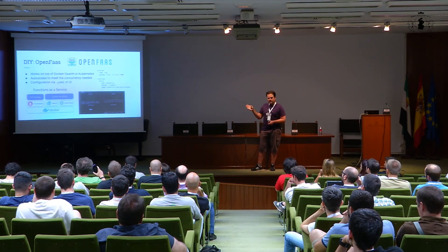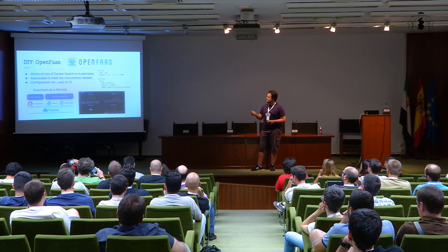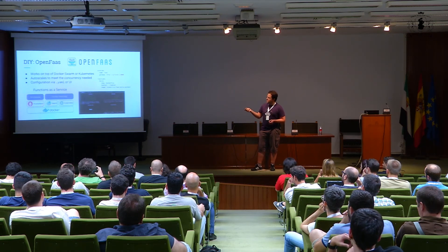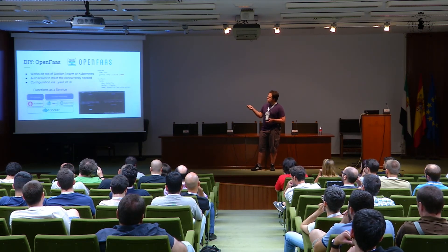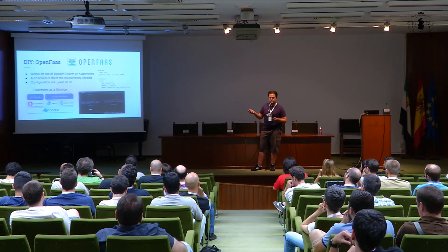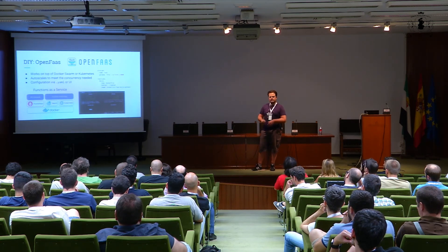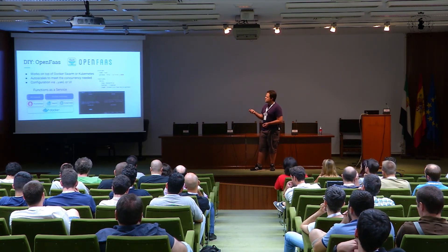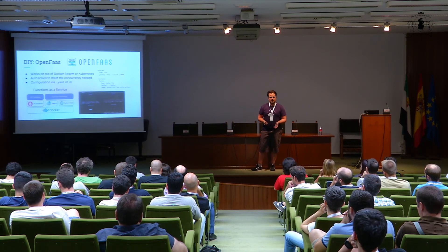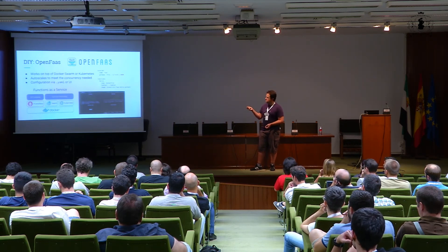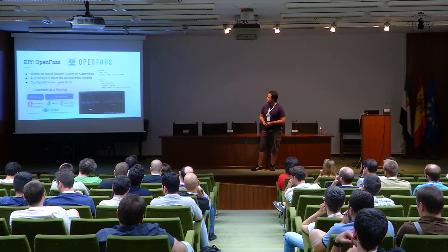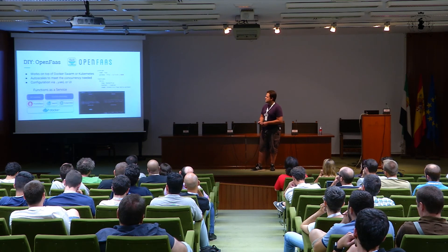This is a very interesting option called OpenFaaS — you will need to deploy a Docker Swarm or Kubernetes cluster and it uses that to run the containers for the functions. One of the main benefits is that it can autoscale, creating new replicas of your service to meet concurrency demand. It is written by Alex Ellis, it was the winner of the DockerCon 2017 cool hacks contest, and it's evolving very fast.